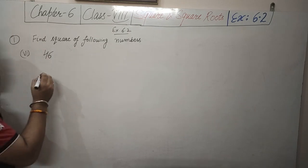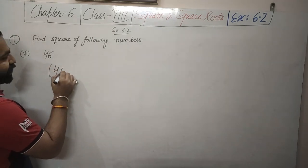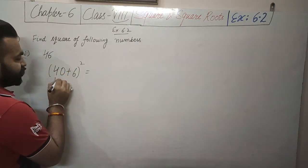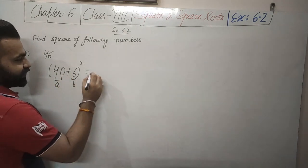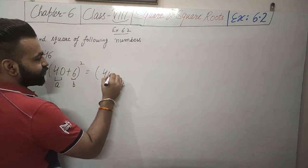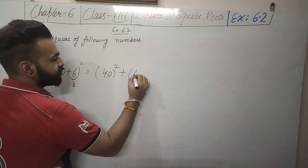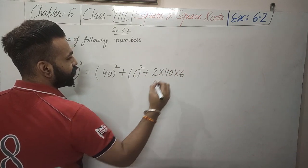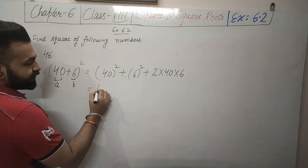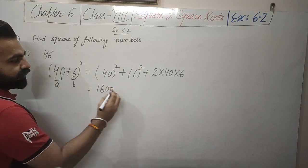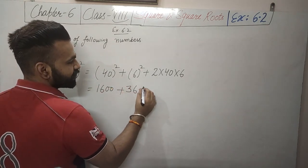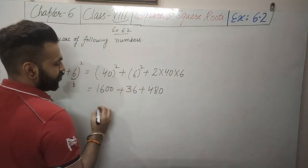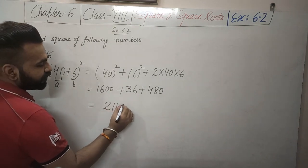Last part of question 1: 46 squared. We write 46 as 40 plus 6, so a is 40 and b is 6. This equals 40 squared plus 6 squared plus 2 into 40 into 6. Now 40 squared is 1600, 6 squared is 36, and 2 into 6 is 12, and 12 into 40 is 480. Adding 1600 plus 36 plus 480 gives 2116.